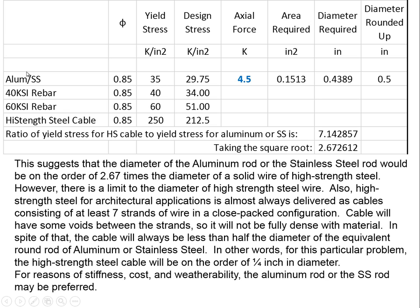I did a spreadsheet where I put in the phi factor and the yield stress for various materials and calculate the design stress. With an input force, the required area and diameter are automatically calculated, along with the rounded-up diameter. What I'd like you to focus on is that the yield stress for high strength steel cable is 250 ksi, while the yield stress for aluminum or stainless steel bar is 35 ksi. Taking the ratio, 250 / 35 = 7.14 — the yield stress of high strength steel cable is 7.14 times greater.